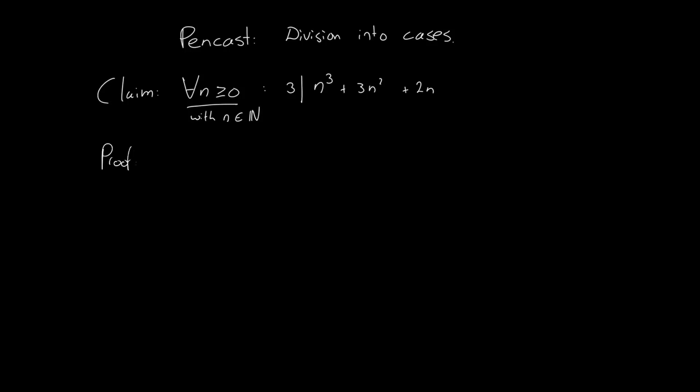Okay, so let's start our proof. We need to prove a 'for all' statement, so of course the first thing we do is take an arbitrary integer k where k is greater than or equal to 0. Now what we need to do is prove that this claim holds for k, so that 3 divides k³ + 3k² + 2k. So how do we do that?